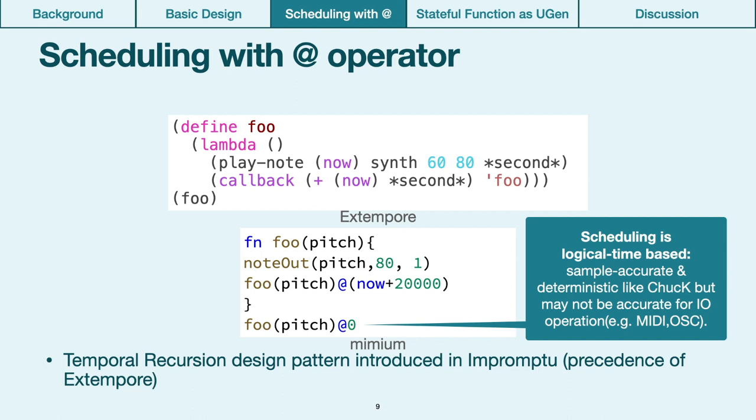The @ operator can be used following a function call. Function with @ is not executed immediately, but it is put into the task queue of the scheduler, along with arguments and time specified following the @ operator. The unit time used for @ operator is an absolute time in samples. To express relative time, another keyword now can be used in Mimium, which acquires the absolute time since AudioDriver launched.